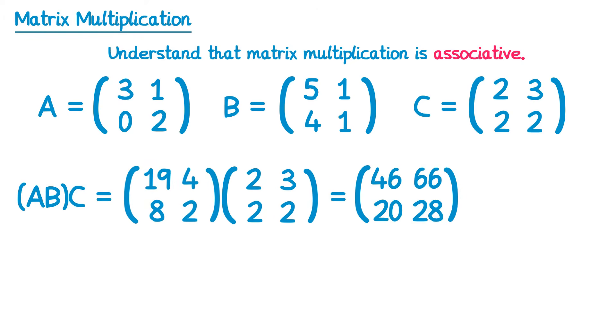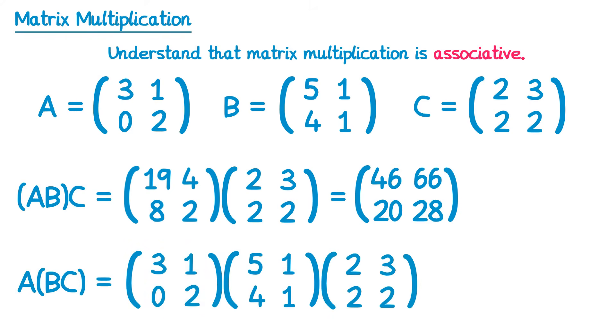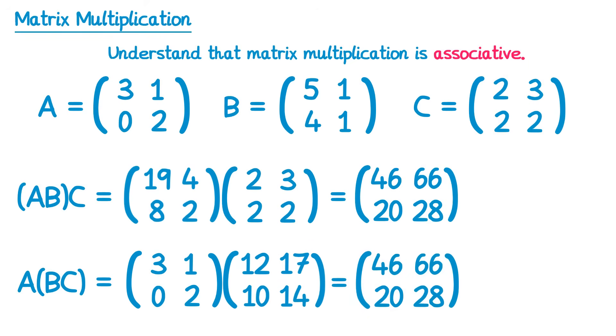Now if you did it slightly differently, you're still going to do ABC, but do the BC first. So A, B, C, but this time you multiply the second two matrices. Now if you multiply those two matrices, you get another one that looks like this. So you would do A, times this matrix, which also gets you this. Since these come out as the same result, we can see that matrix multiplication is associative.